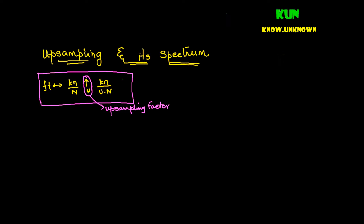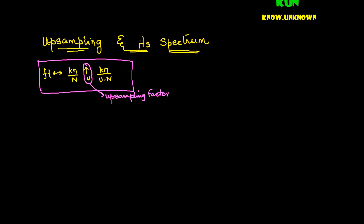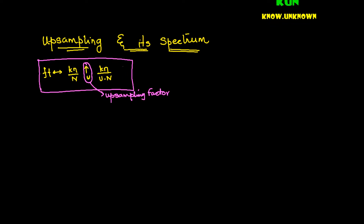To recap what we did in our last video: we tried to derive a relationship where, if you already have a pre-sampled discrete sequence and you upsample it by a certain factor, the index gets scaled by that factor u. So k times n gets translated to k times n divided by u. Now let us see how the actual upsampling process happens and look at the spectrum of an upsampled signal.